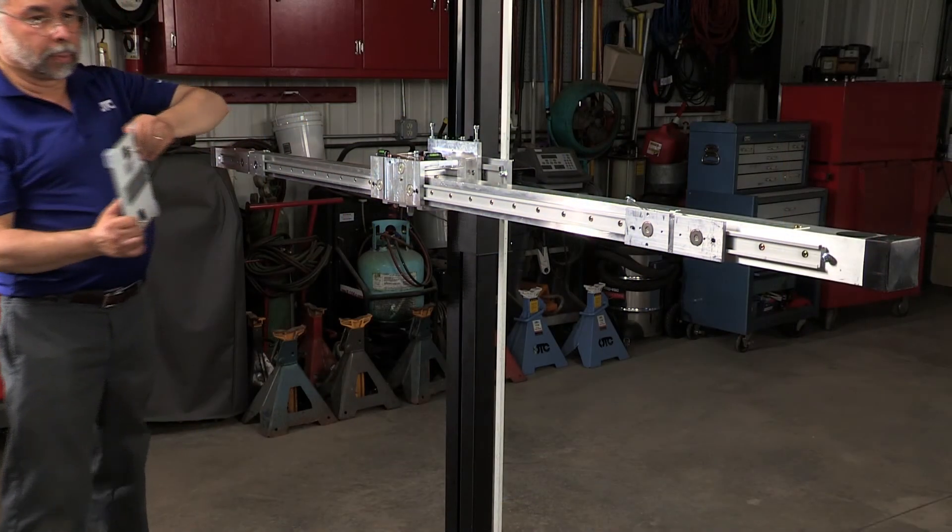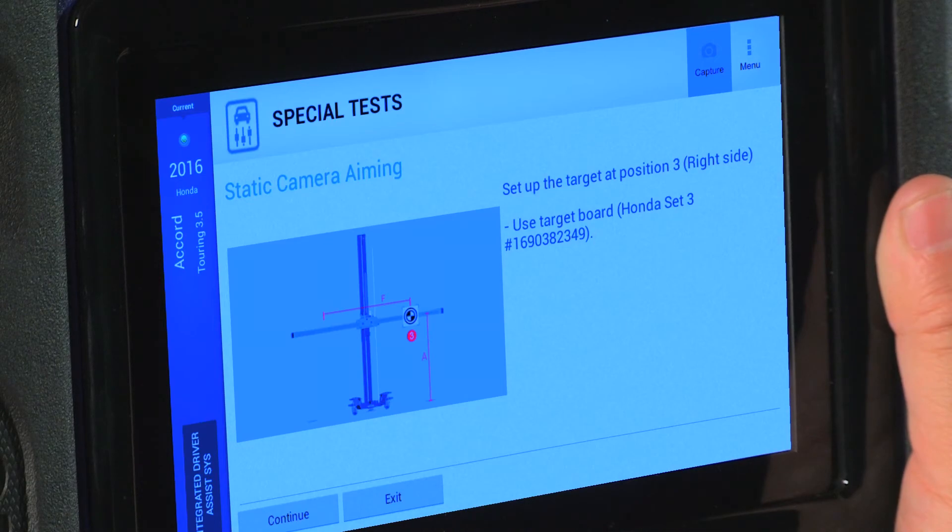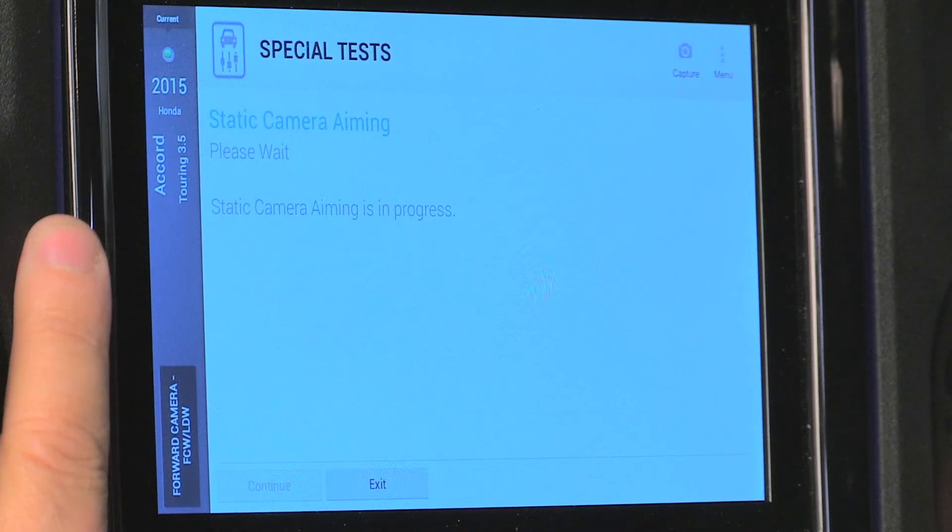For the final step of the calibration, we are going to move the target to position 3 or the right side. Once you have moved to the right side, go back to the scan tool and press continue.